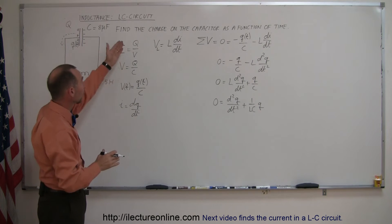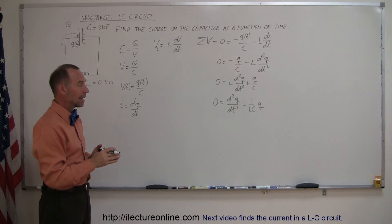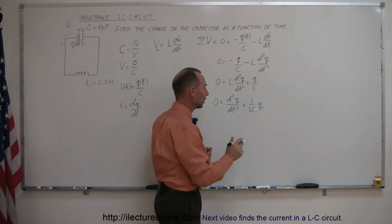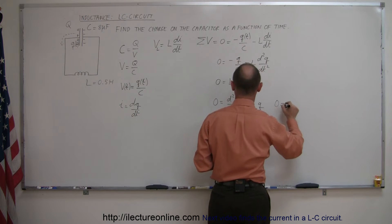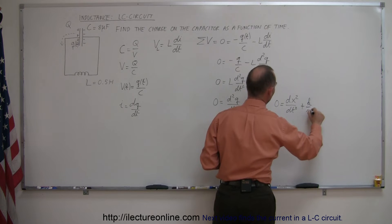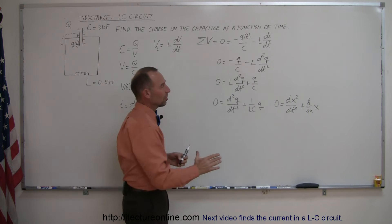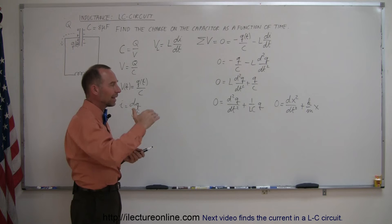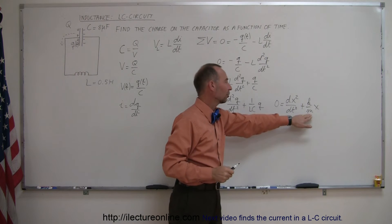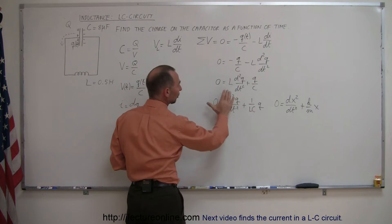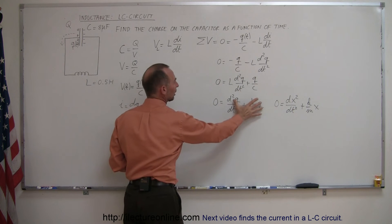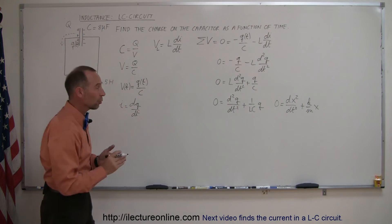Notice that Q is the variable we're looking for — the charge on the capacitor as a function of time — and it looks a lot like an equation we've seen before: the oscillating spring. The differential equation for the oscillating spring is zero equals d²x/dt² plus (K/M) times x, where x was the displacement, M was the mass, and K was the spring constant. You can see that what determines what happens in the circuit is the inductance and the capacitance, not the spring constant and the mass. The variable is Q, the charge, instead of x, the displacement. But the equation looks exactly the same.